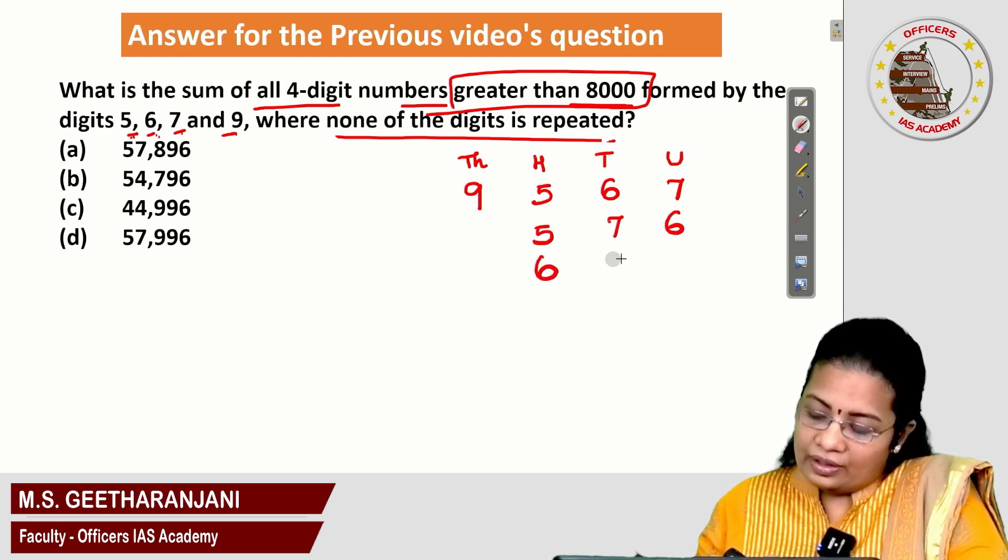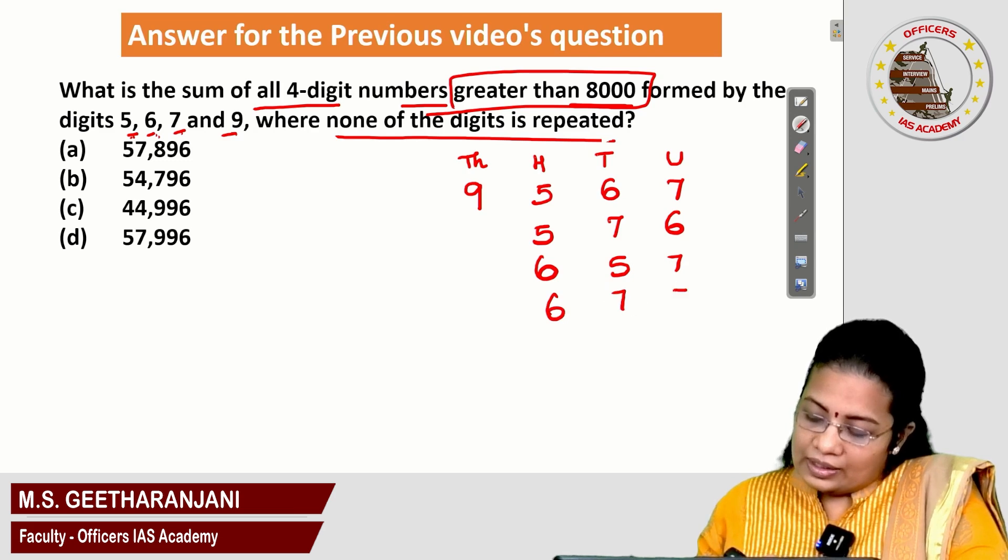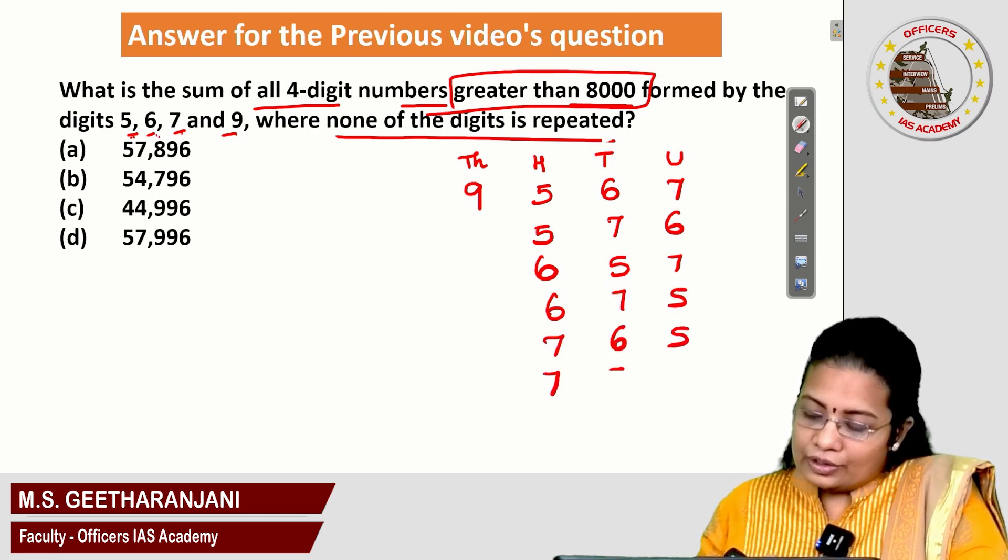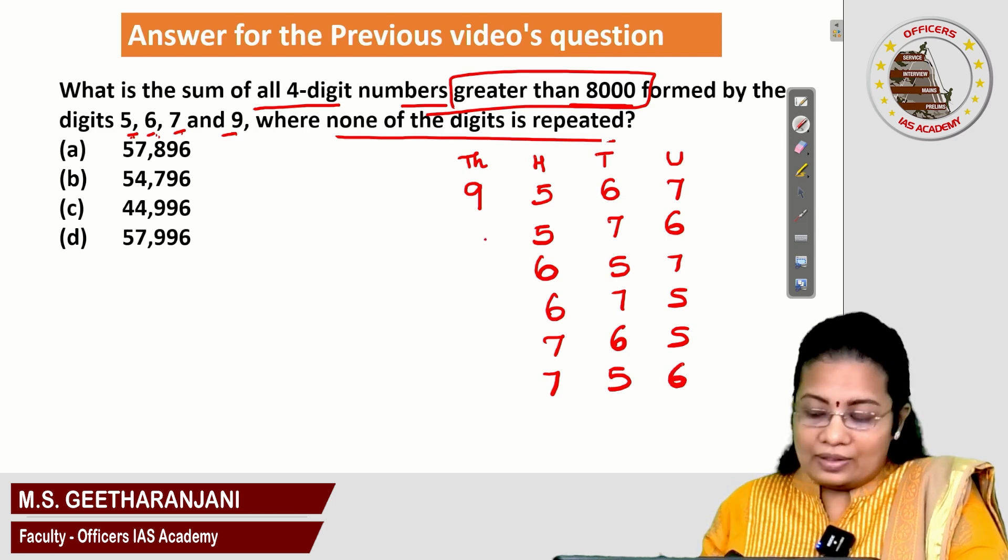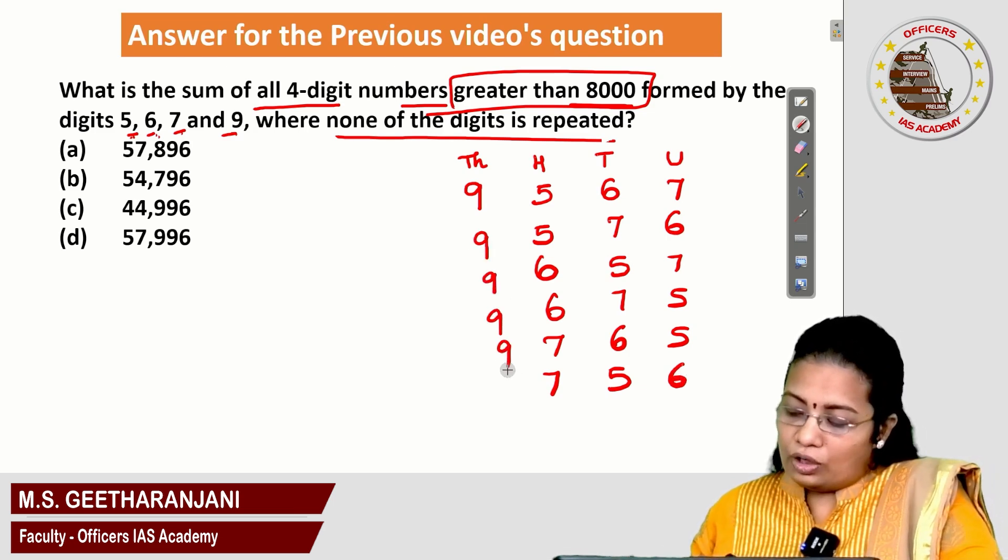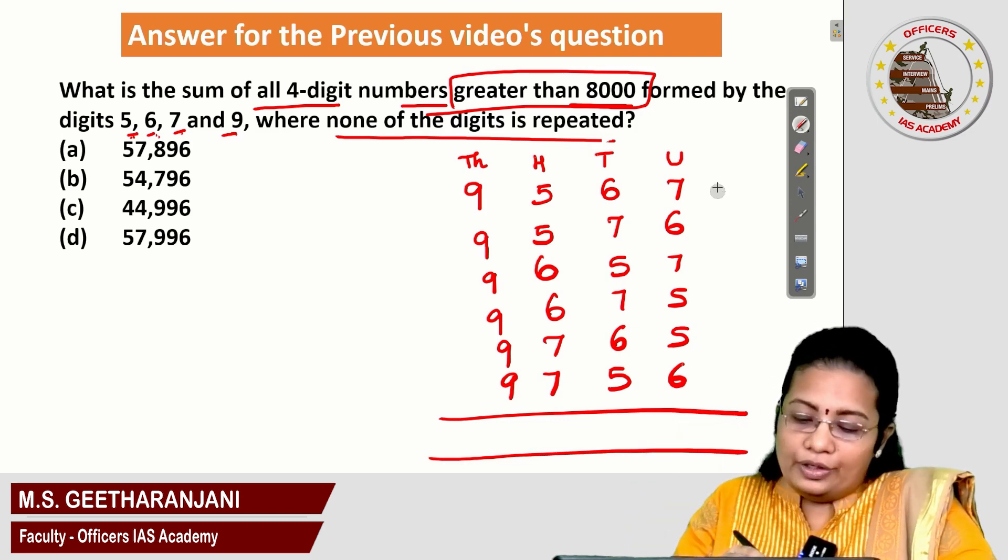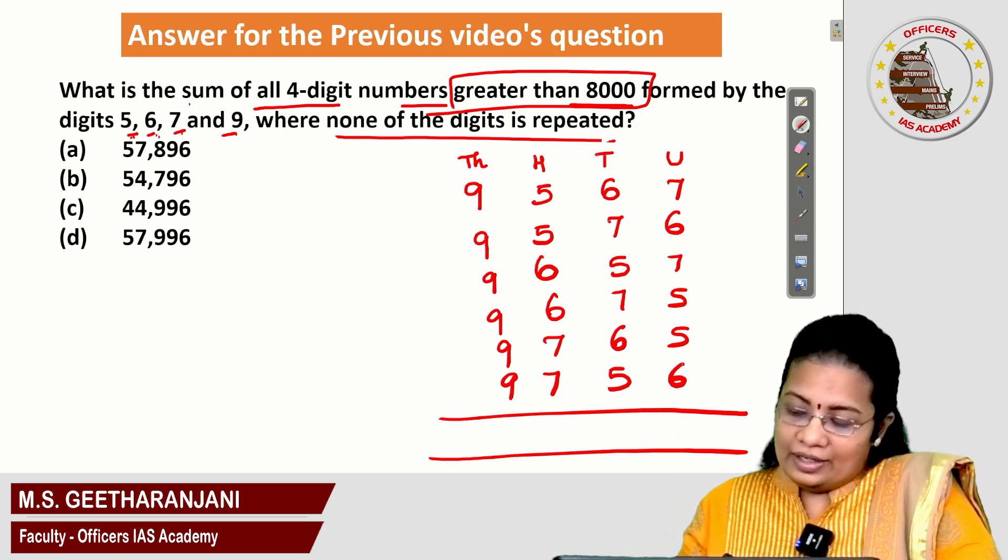Next, 6, 7, 5. Next, 7, 6, 5. Another one, 7, 5, 6. In the thousands place, number 9 is constant. Now, how many different numbers we got? Six different numbers. We need to find the sum. Let's take the sum.